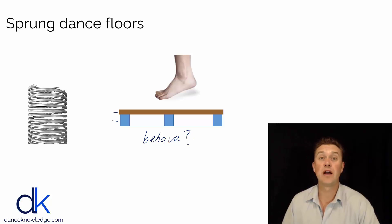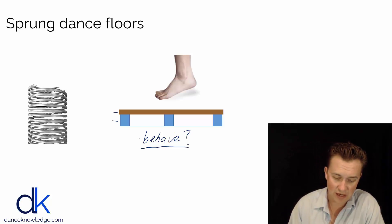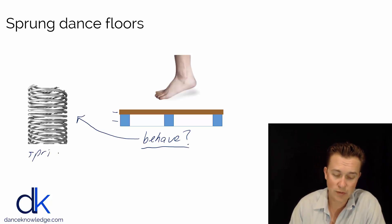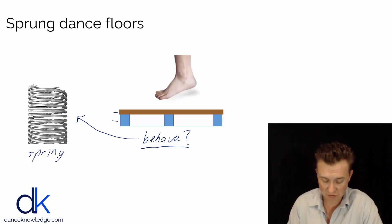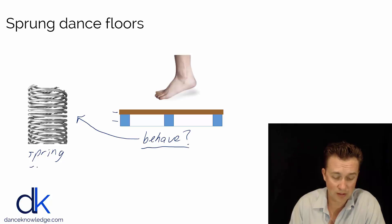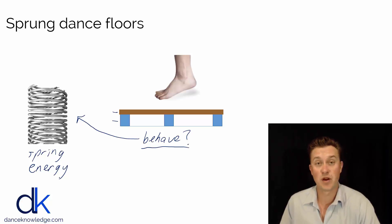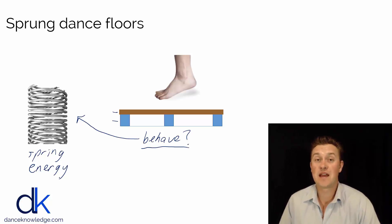One of the best ways to describe a floor's behavior is to look at the properties of the floor as acting like a spring, as you can see here. We look at the properties of a floor as spring-like because a spring is really good at absorbing and returning energy — and that's a crucial component of a sprung dance floor: it can both absorb energy and return it to the dancer.